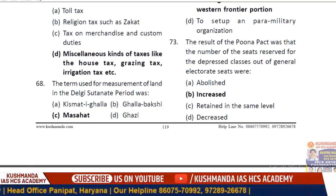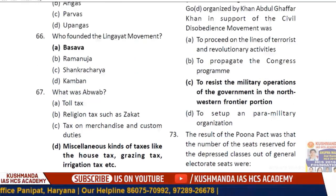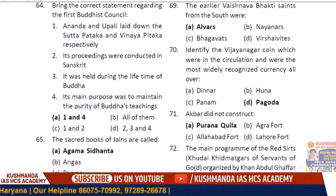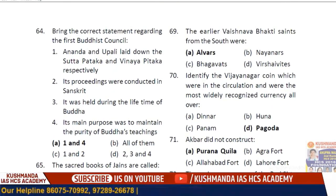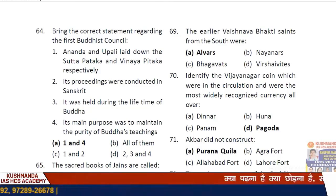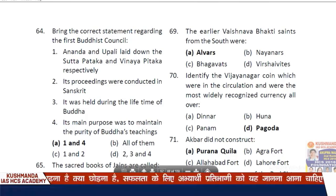Question on Sultanate period: The unit of measurement was Masahat. Earlier Vaishnava Bhakti saints from the south were the Alvars, while the Nayanars were Shaiva Bhakti saints.